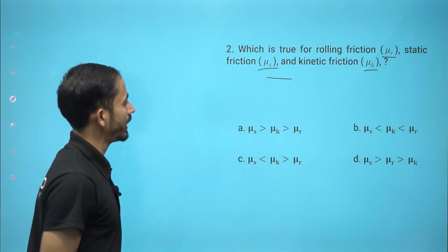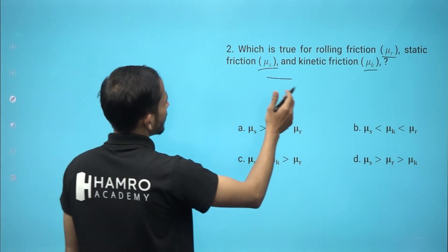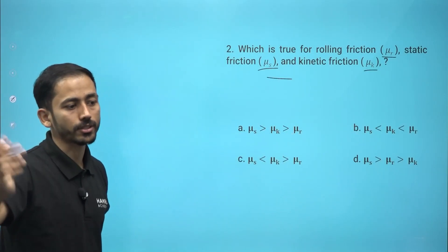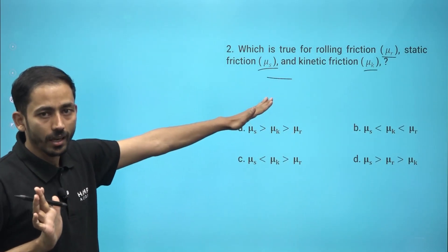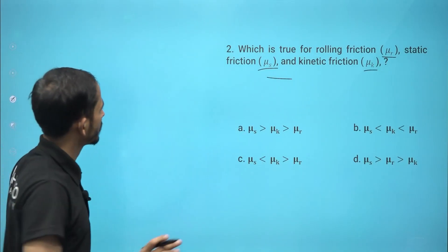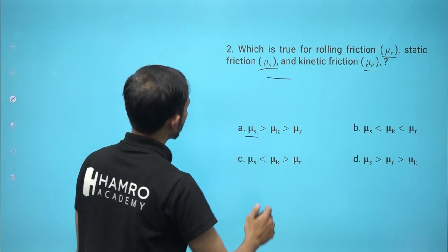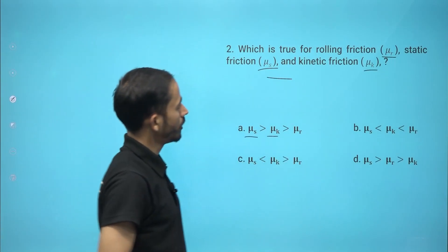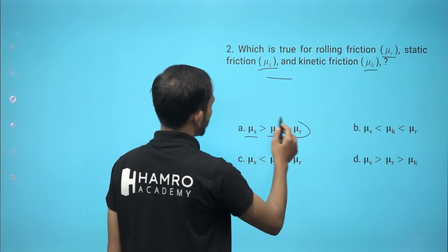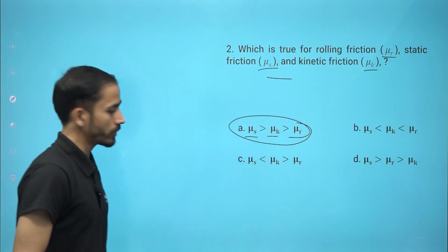The value of static friction is self-adjustable — it can adjust up to its limiting value but cannot exceed it. Among all friction types, static friction is the largest, then kinetic friction, and rolling friction is the smallest. So rolling friction is least among all three.